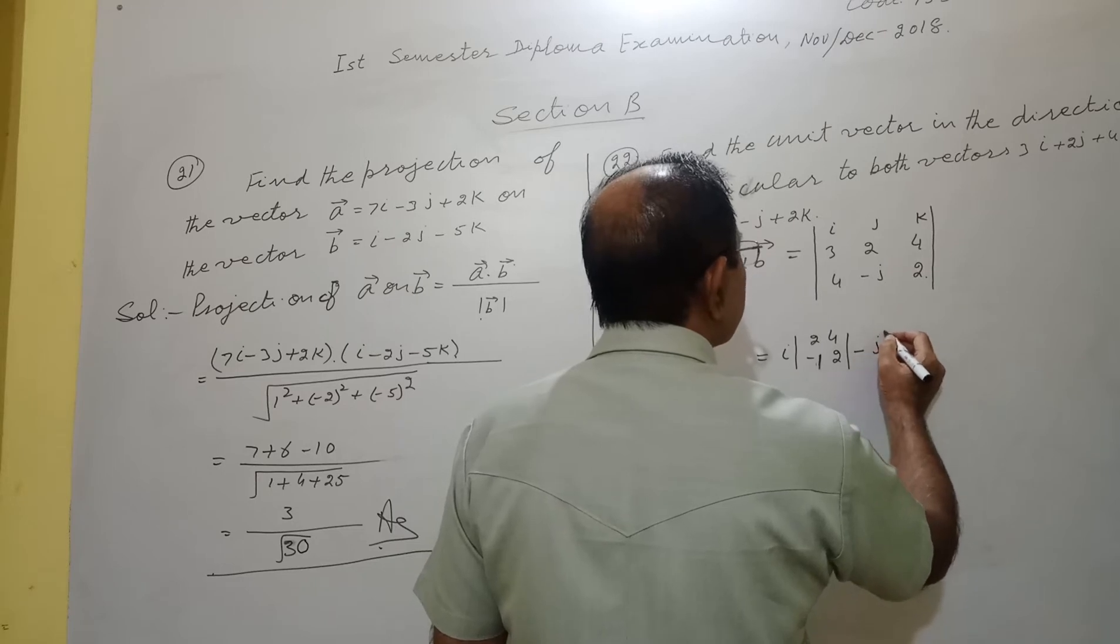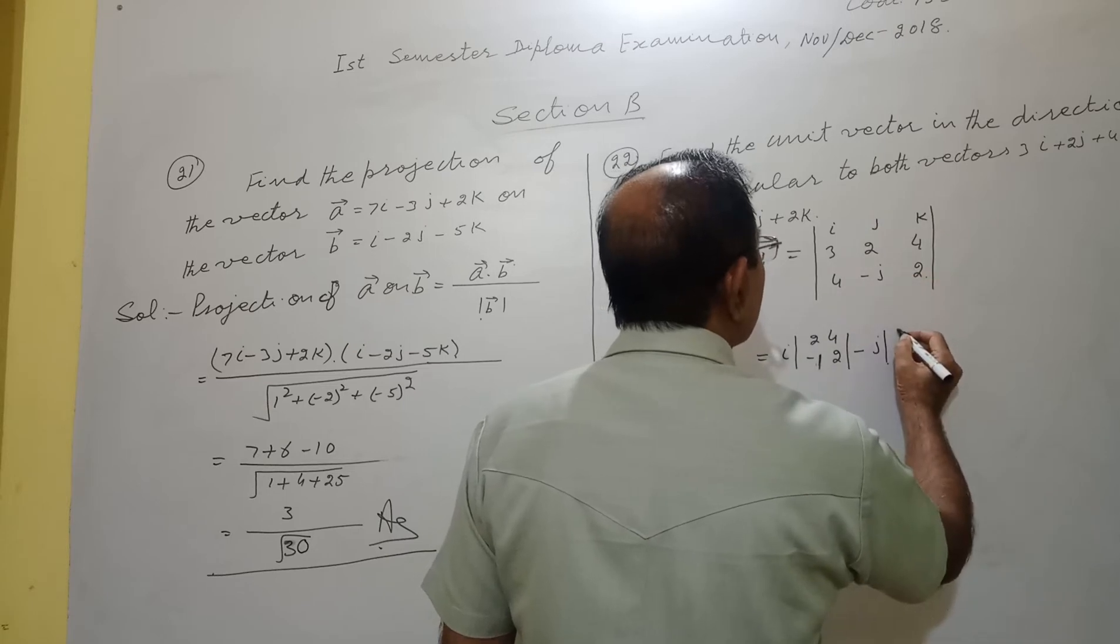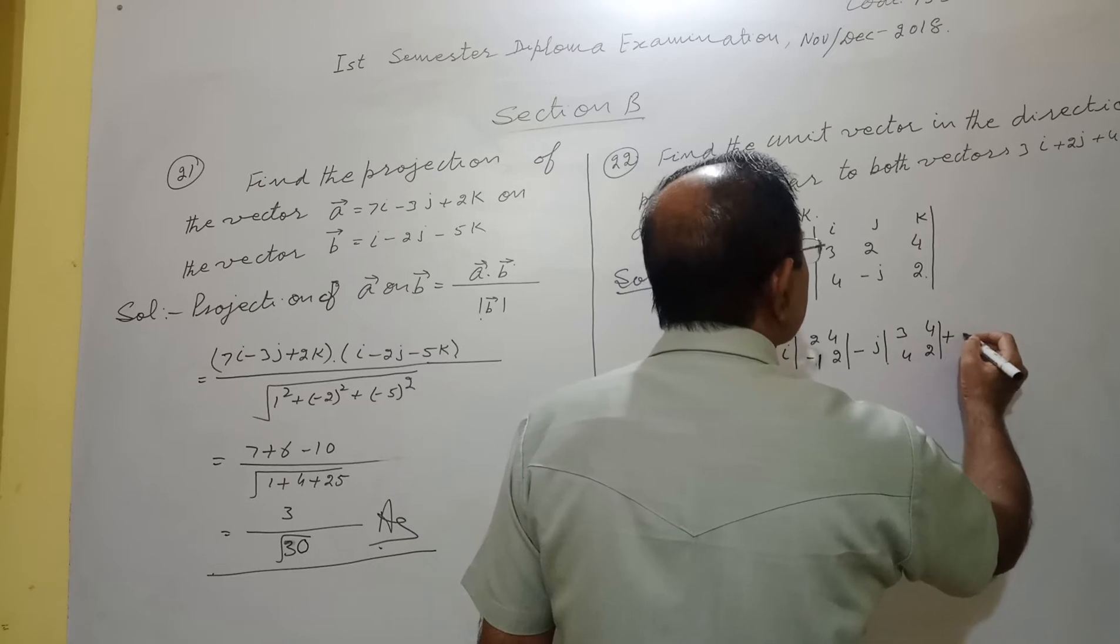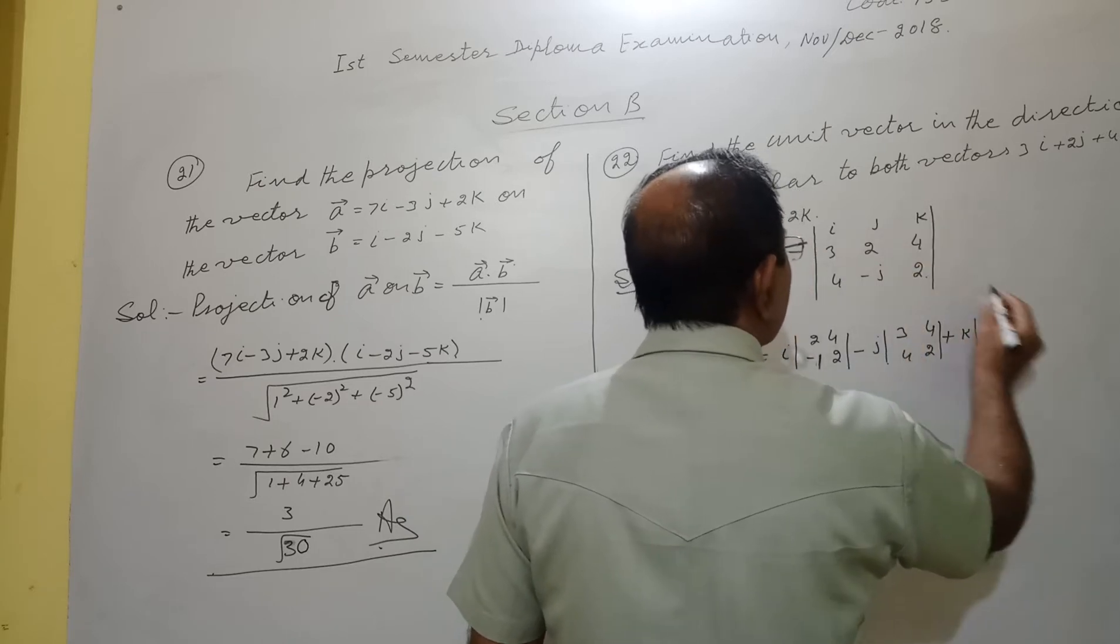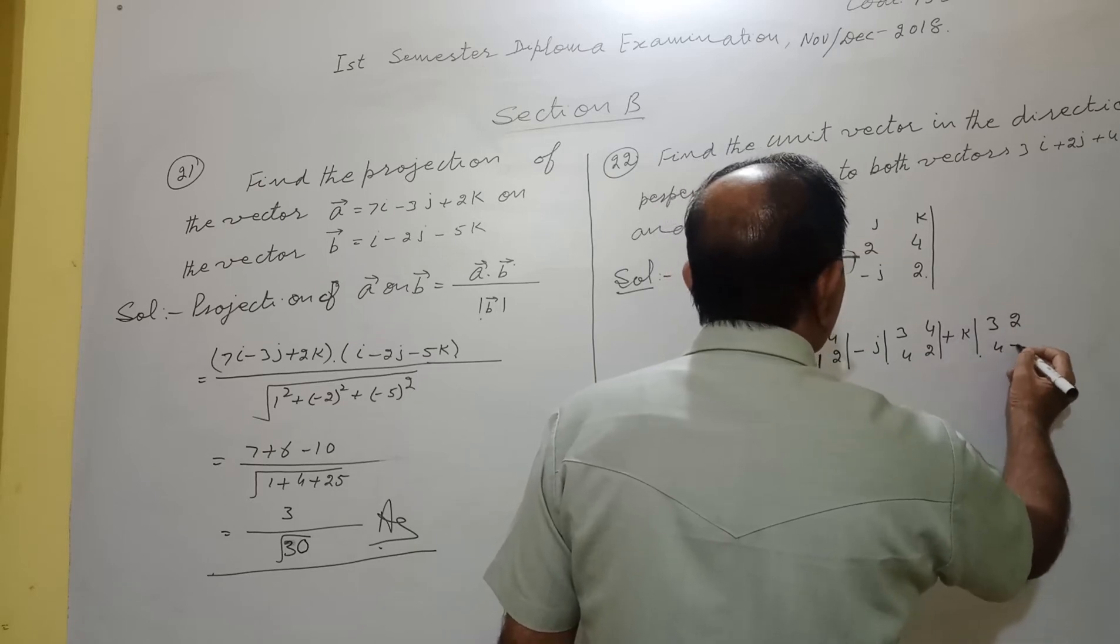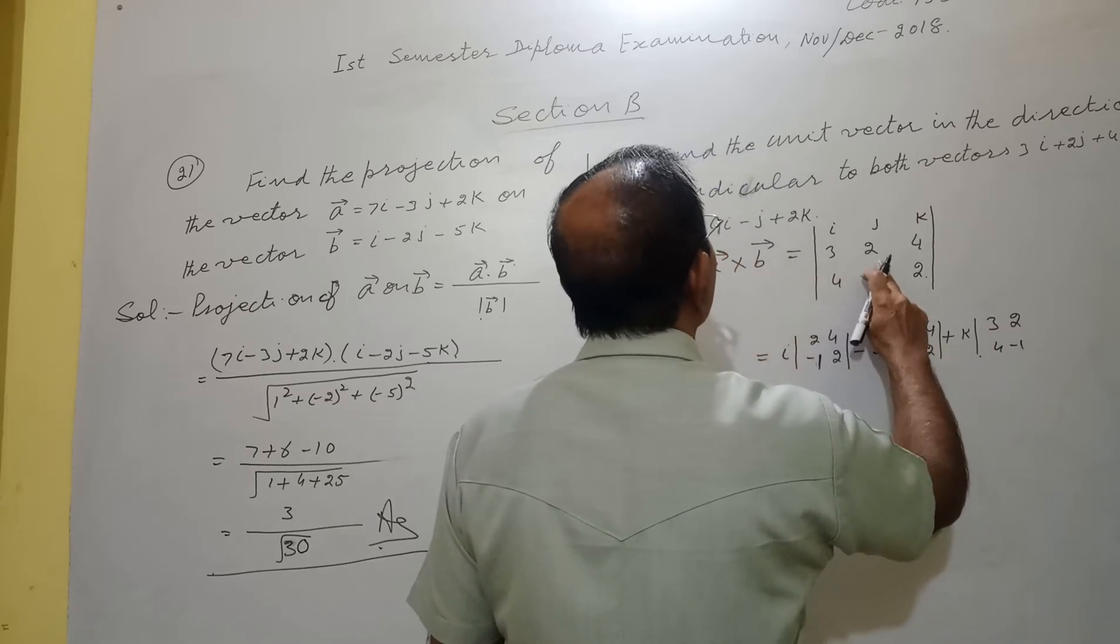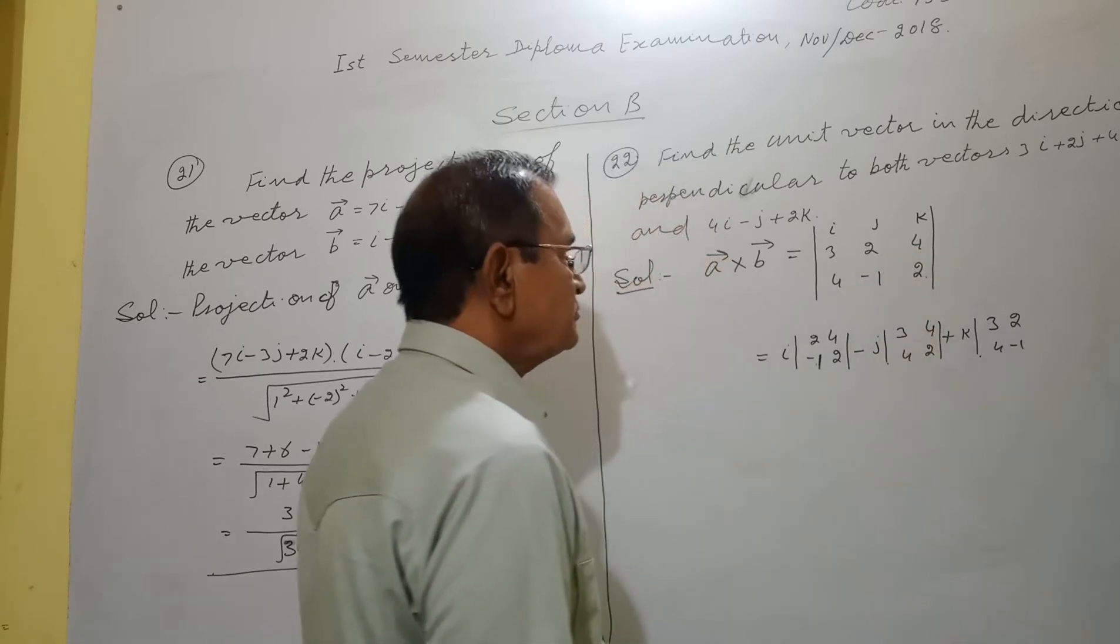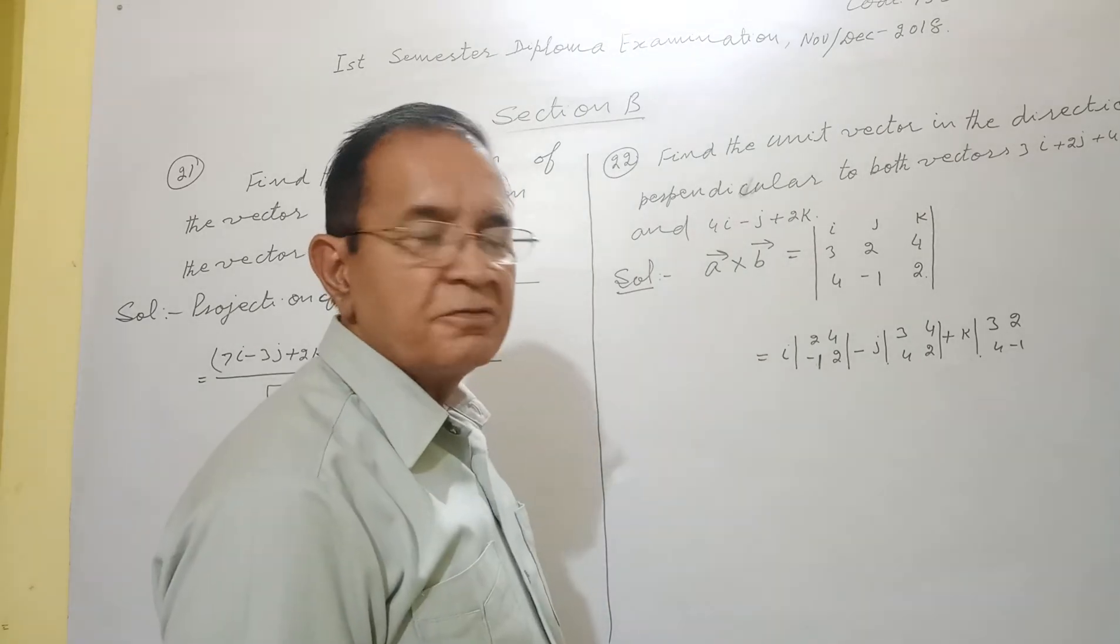Minus j, cut row, cut column: 3, 4, 4, 2. Plus k, cut row, cut column: 3, 2, 4, minus 1. It is minus 1 here because we have to put the coefficient of j, which is minus 1.